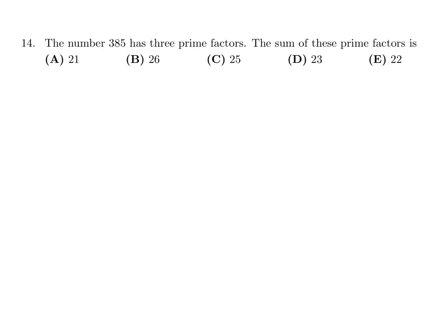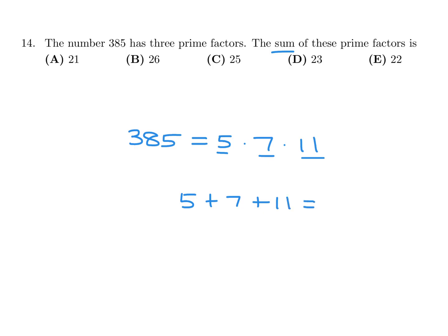The number 385 has three prime factors. The sum of these prime factors is... let's see. It's obviously divisible by 5, and then 7 and then 11 — so that's the prime factorization. They want the sum of those prime factors: 5 plus 7 plus 11, which is 23. So number 14, the answer is D.